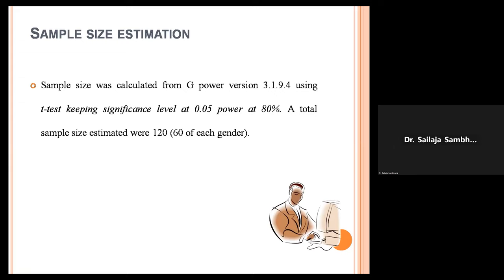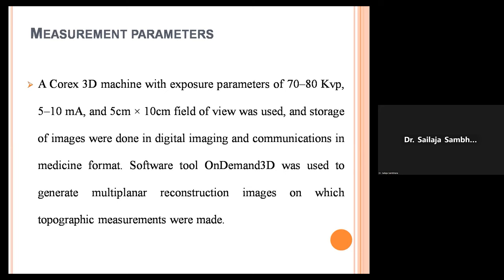Sample size was calculated from G-Power version 3.1 using a T-test, keeping significance level at 0.05. At 80% power, the total sample size estimated was 120, with 60 of each gender. A Carestream 3D machine with exposure parameters of 70 to 80 kVp, 5 to 10 mA, and 5 cm × 10 cm field of view was used. Images were stored in DICOM format and the software On-Demand 3D was used to generate multi-planar reconstruction images for topographic measurements.